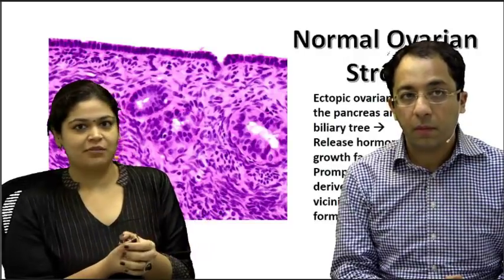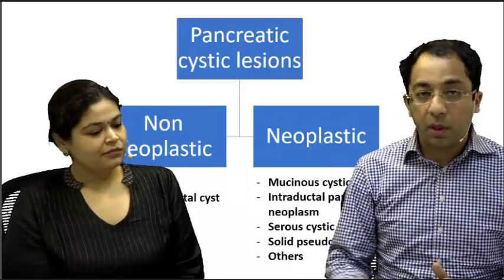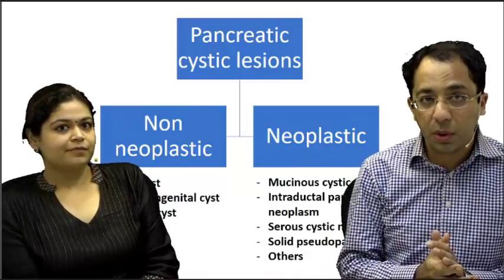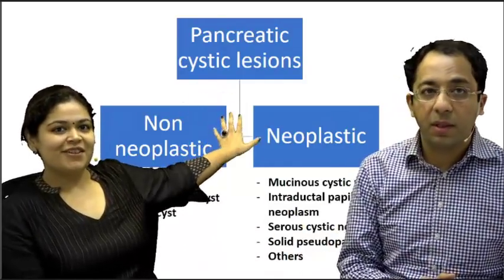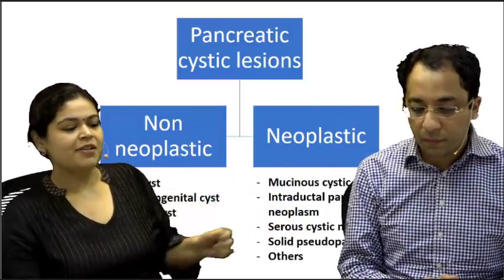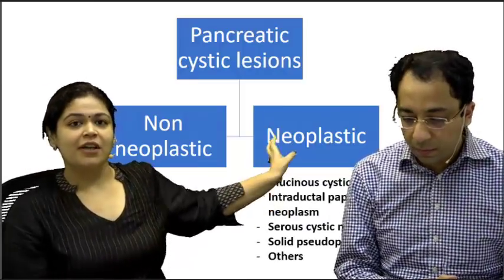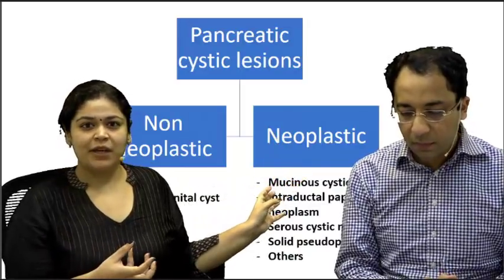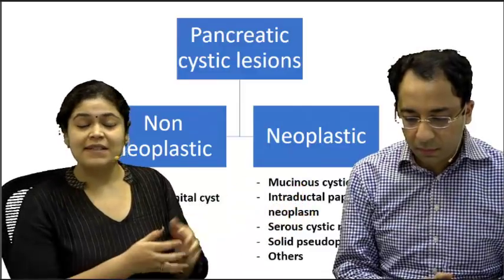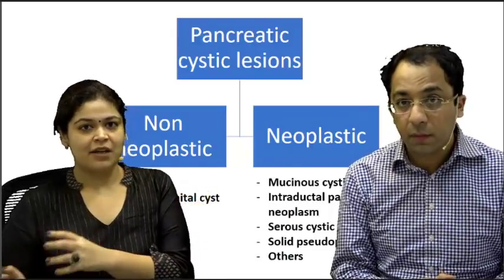This ovarian stroma is considered very diagnostic — many pathologists will not diagnose a mucinous cystic neoplasm without demonstrating ovarian stroma. Now, dividing pancreatic cystic lesions into neoplastic and non-neoplastic: non-neoplastic lesions include pseudocyst, simple cyst, and retention cyst. Neoplastic lesions include mucinous, intraductal papillary mucinous, serocystic, and solid pseudopapillary neoplasms.